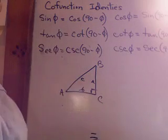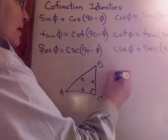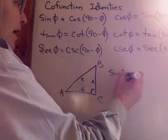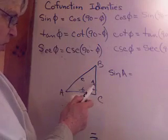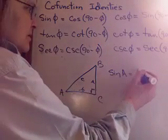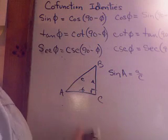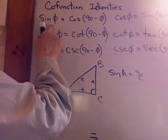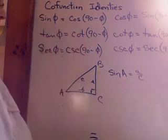Now, if I look at this picture and I ask, what is the sine of angle A? You know from using the sine rules that it's opposite over hypotenuse, so it's a over c. Okay, now, this cofunction says the sine of phi is equal to the cosine of 90 minus phi.